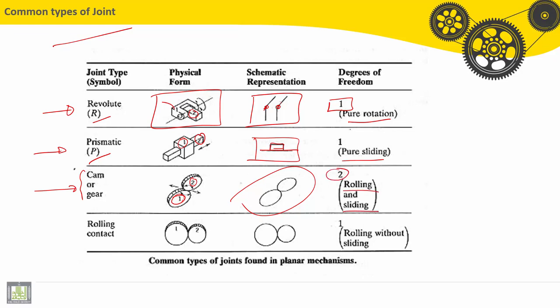If you remember, in the previous part, the contact between two teeth in a gear is line. And then, it is a higher pair. So we have rolling and sliding. We have two degrees of freedom.